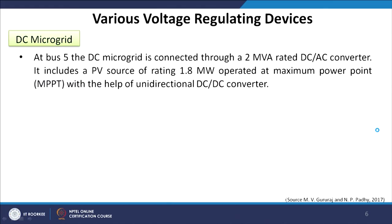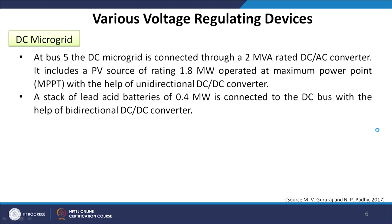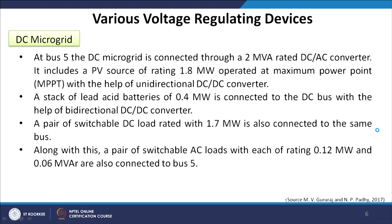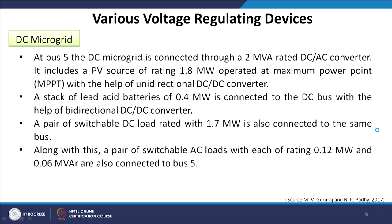A DC microgrid site is included at bus number 5, where it is connected through a 2 MVA rated DC-AC converter. It includes a PV source of rating 1.8 MW operated at MPPT using a unidirectional DC-DC converter. A stack of lead-acid batteries with capacity 0.4 MW is also connected at the same bus, along with a pair of switchable DC loads rated at 1.7 MW and a pair of switchable AC loads each rated at 0.12 MW and 0.06 MVA.